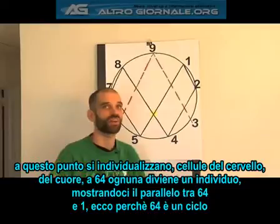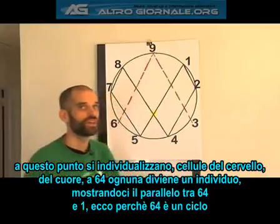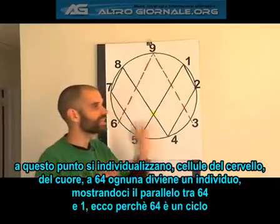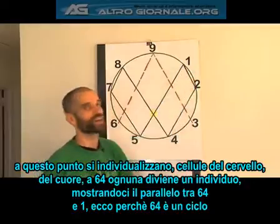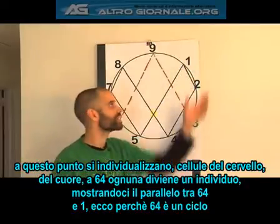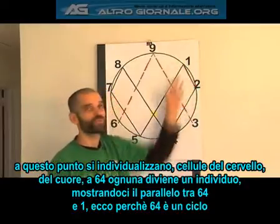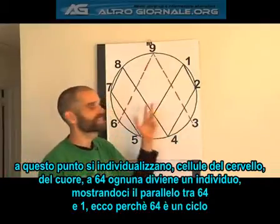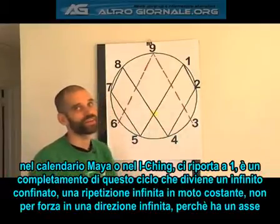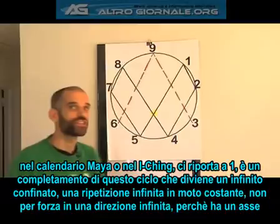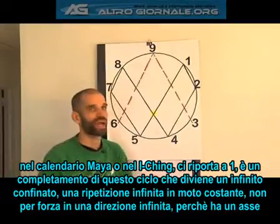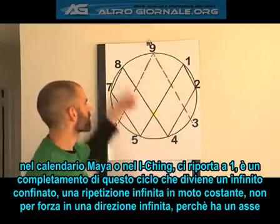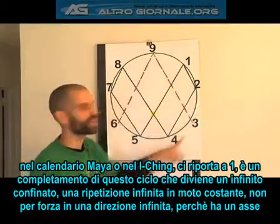They can become brain cells or heart cells. So at 64, you get each cell becoming an individual, showing the parallel between the 64 and the one. This is why 64 is a cycle in the Mayan calendar or in the I Ching, all relating back to the one.